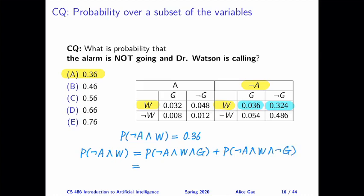And the two numbers are 0.036 plus 0.324, which is equal to 0.36.